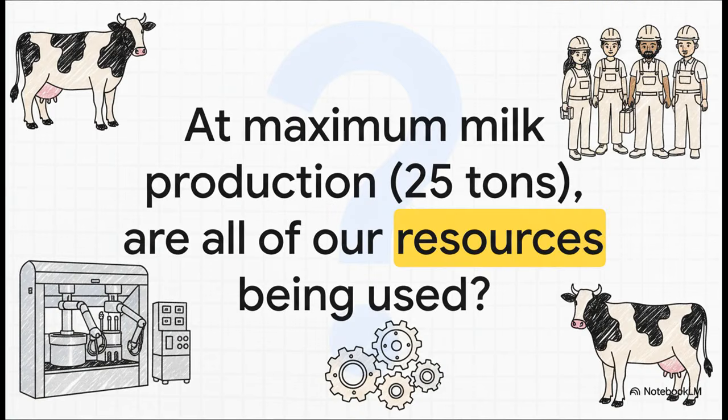Let's take a closer look at that point of maximum milk production, 25 tons. We are on the frontier, so we're being as efficient as we possibly can be. But what does that efficiency actually look like when we check in on our workers and machines?